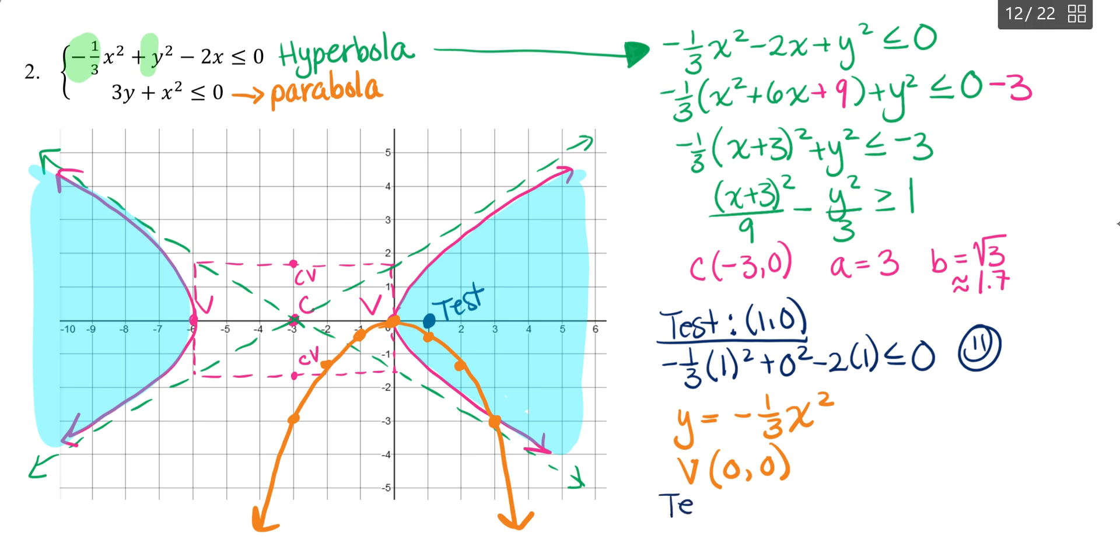So test any point that is not on the parabola. So what's an easy one here? How about zero negative one? So testing zero negative one, I have three times negative one plus zero squared. Is that less than or equal to zero? So that's negative three is less than or equal to zero. Yes, that works also. Again, since that works, we're going to shade where that point's located. So that point is located right here inside my hyperbola. So the parabola is going to eat up all the inside. And here is my solution for the parabola.